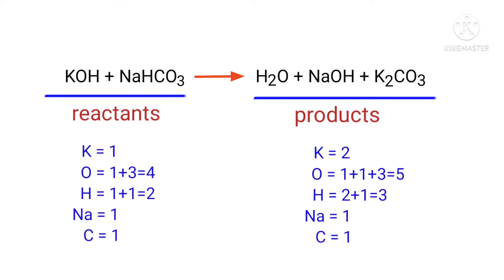If you look at this equation, the equation is not balanced. In the reactants side there are one potassium atom, four oxygen atoms, two hydrogen atoms, one sodium atom, and one carbon atom present.